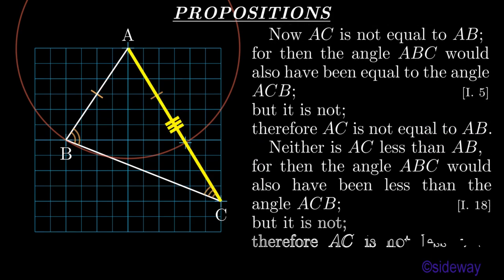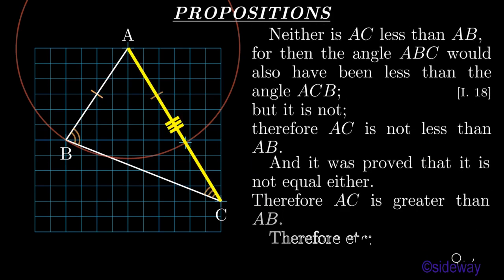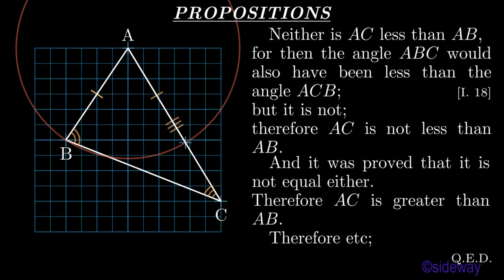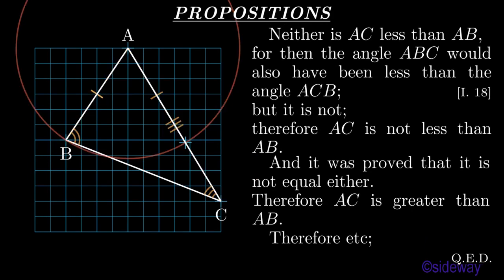Neither is AC less than AB. For then the angle ABC would also have been less than the angle ACB, by Book 1 Proposition 18. But it is not. Therefore AC is not less than AB. And it was proved that it is not equal either. Therefore AC is greater than AB. Therefore, etc. What was to be shown?